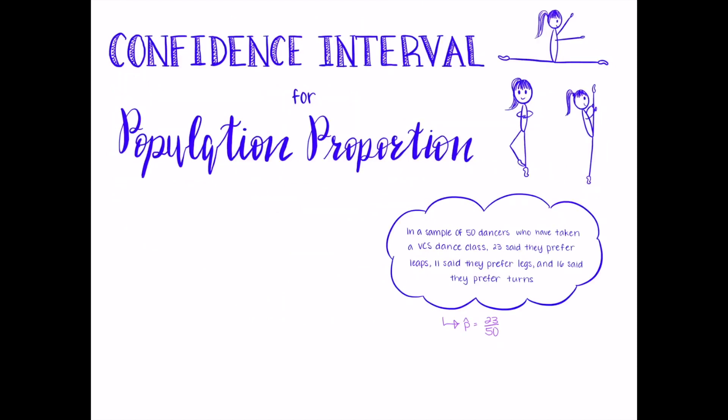To construct the confidence interval, we use the acronym PANIC. P stands for population parameter, which is: Let P equal the true proportion of VCS dancers who said they prefer leaps over legs and turns.